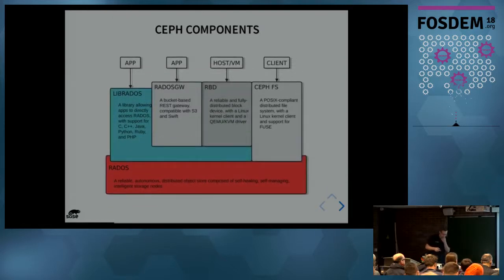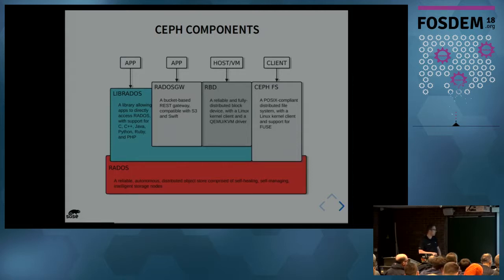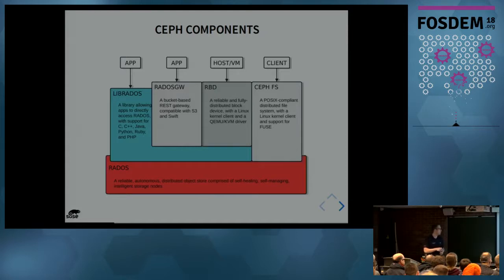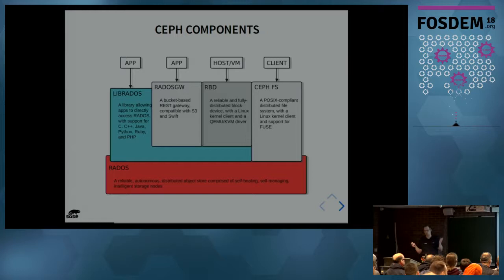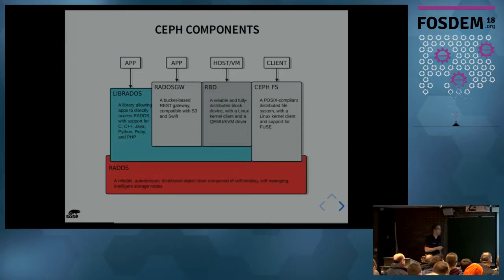Those are the components of Ceph — the different ways to get access to the data. First of all, underneath there is the RADOS layer, the distributed object storage. Then you have four different ways to access this data. First, there is LibRADOS directly — you can query LibRADOS via your preferred programming language: C, C++, Java, Python, whatever you like.